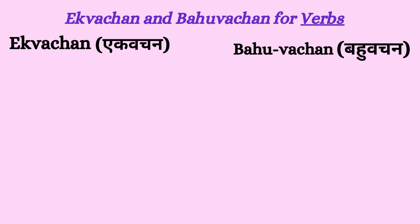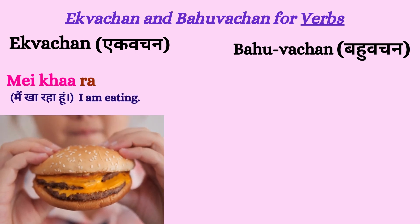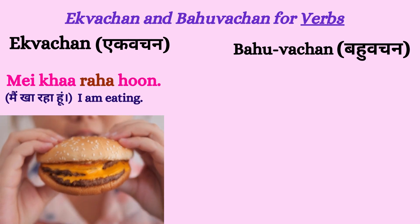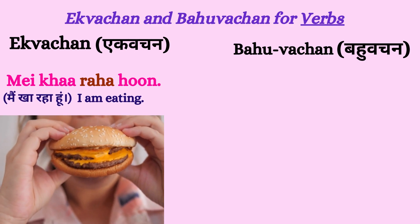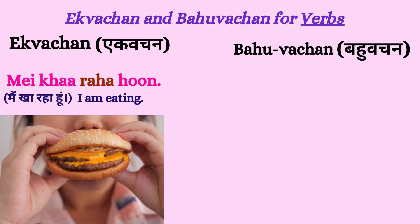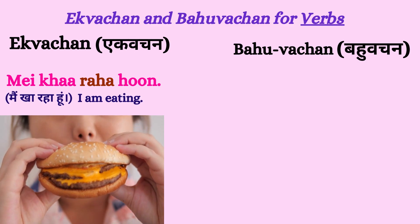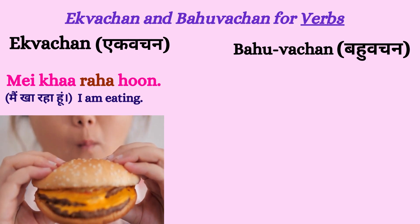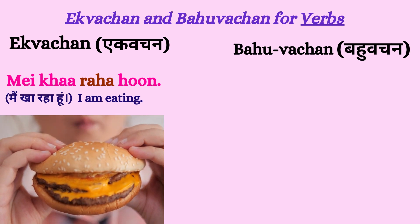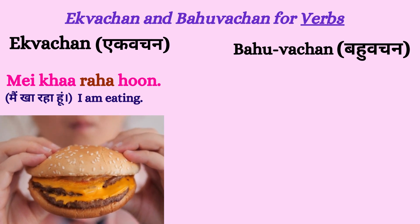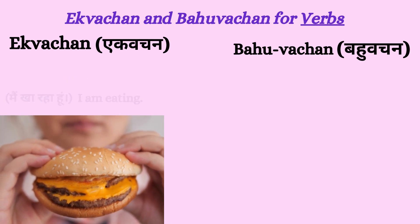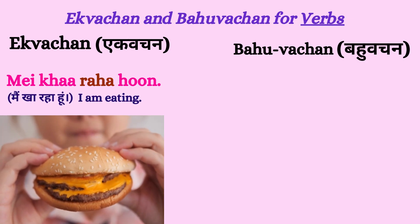Lastly, friends, there is something called a singular verb and plural verb. Let's understand with the help of a few examples. If someone says 'I am eating' — if a boy says it, it will be main kha raha hun. If a girl says it, it will be main kha rahi hun. That means it's a singular sentence because the verb is in a singular form.